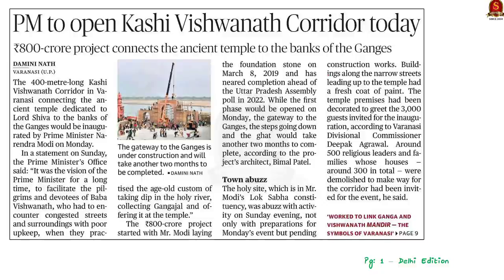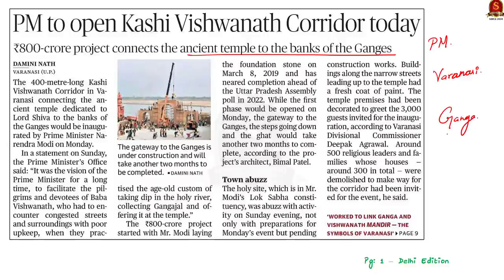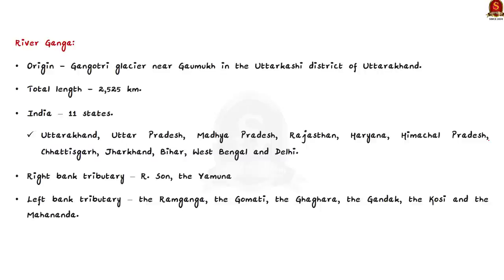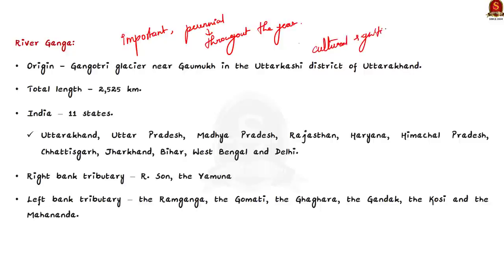This article reports that Prime Minister Narendra Modi will launch the 400-metre-long Kashi Vishwanath Corridor in Varanasi, connecting an ancient Shiva shrine to the banks of the Ganges. Using this as context, let us focus on learning about the Ganga river system, its major tributaries, and important points related to the Ganges from a prelims perspective. The Ganga is the most important river of India and one of the perennial rivers — perennial rivers have a flow of water throughout the year. The Ganga has great cultural significance and is considered a goddess holding an important place in Hindu religion.